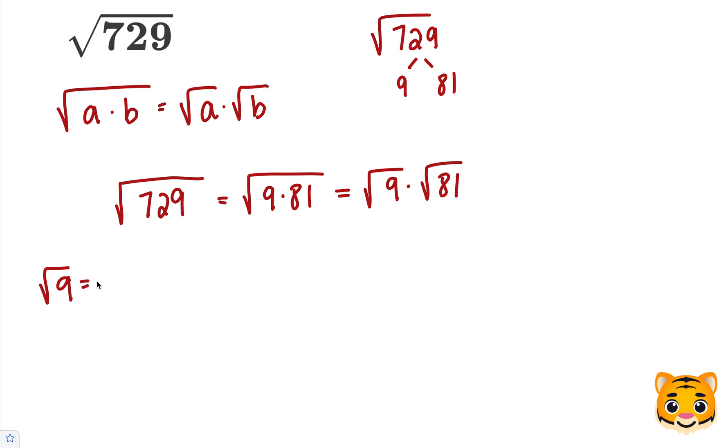The square root of 9 is equal to 3 because 9 is equal to 3 squared, or 3 times 3. The square root of 81 is equal to 9 because 81 is equal to 9 squared.